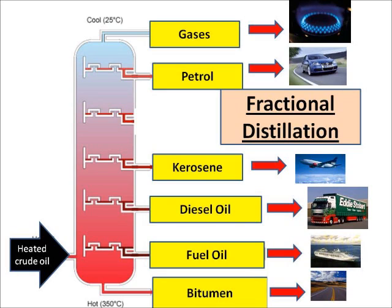Gases are used for cooking. Petrol is used as a fuel for cars. Kerosene is used as a fuel for planes. Diesel is used as a fuel for lorries and cars as well. Fuel oil is used as a fuel for ships. And bitumen is used on roads.